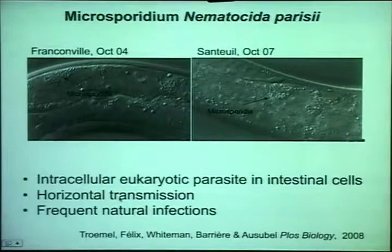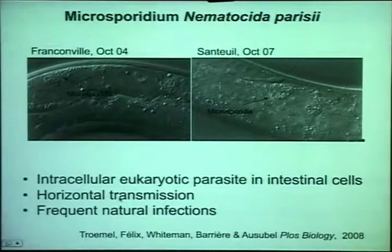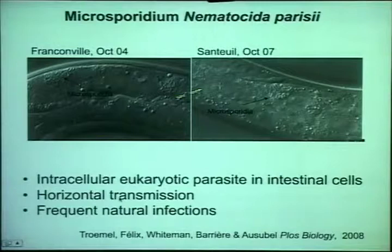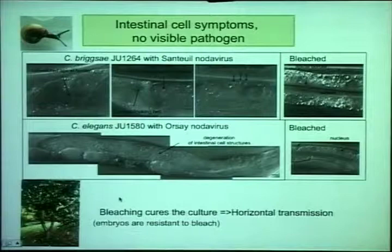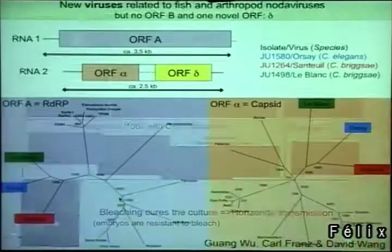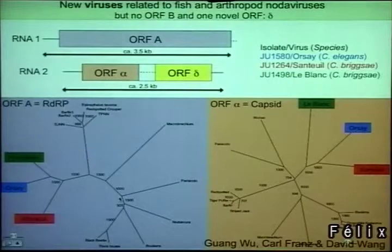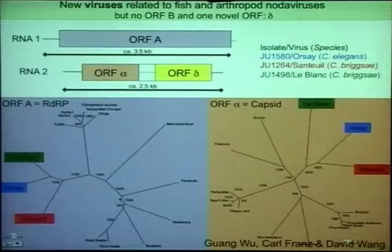You have microsporidia, which are eukaryotic obligate parasites that infect cells intracellularly — in this case the intestinal cells, which are the first cells attacked when you eat something. This is a very frequent natural infection. Then I encountered interesting symptoms where I could not see any pathogens but could cure the culture and reinfect it. After 0.2 micron filtration the symptoms could still be transmitted, suggesting a virus. In collaboration with David Wang at WashU, we found three viruses which infect C. elegans or C. briggsae.